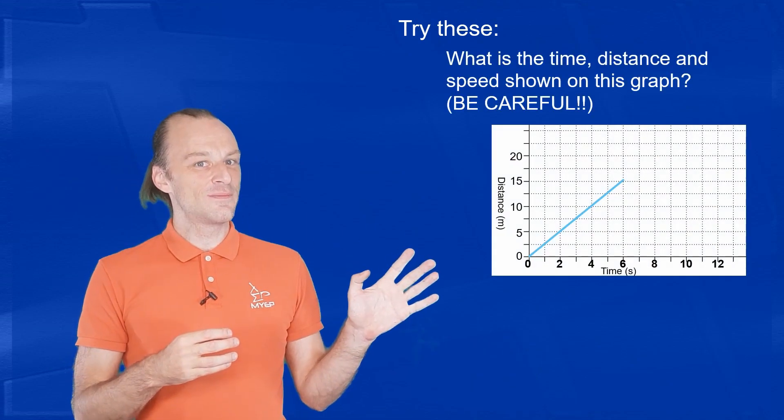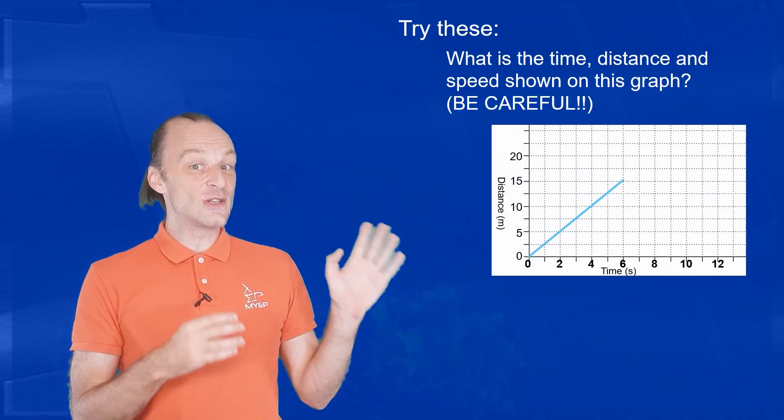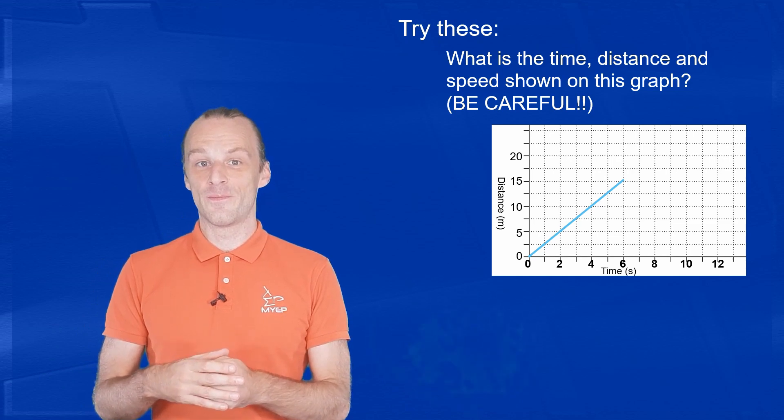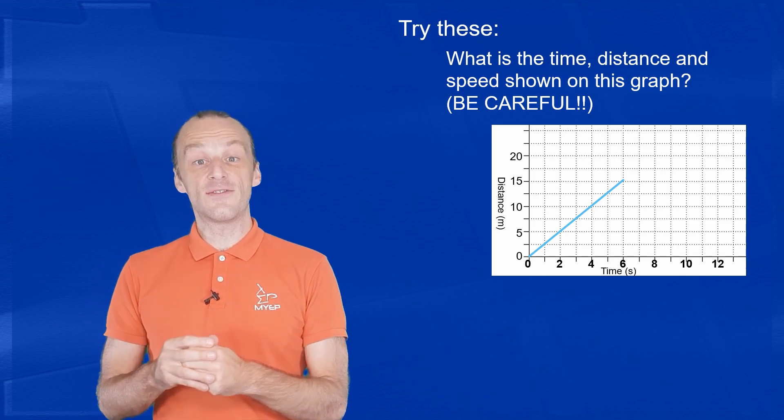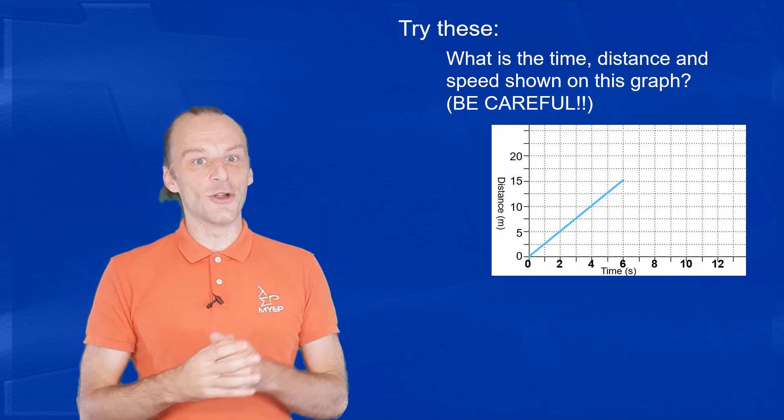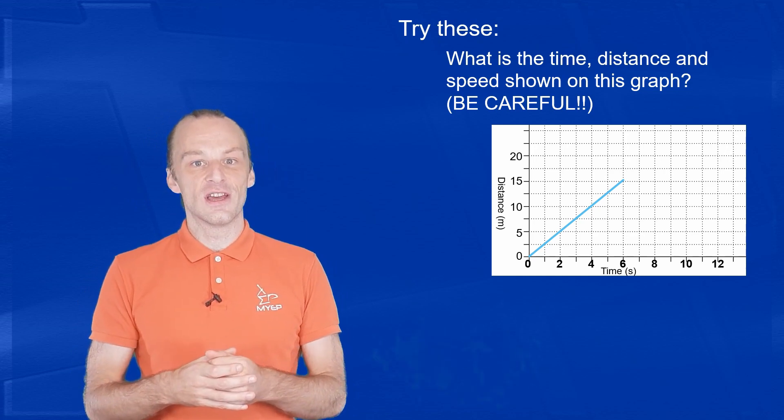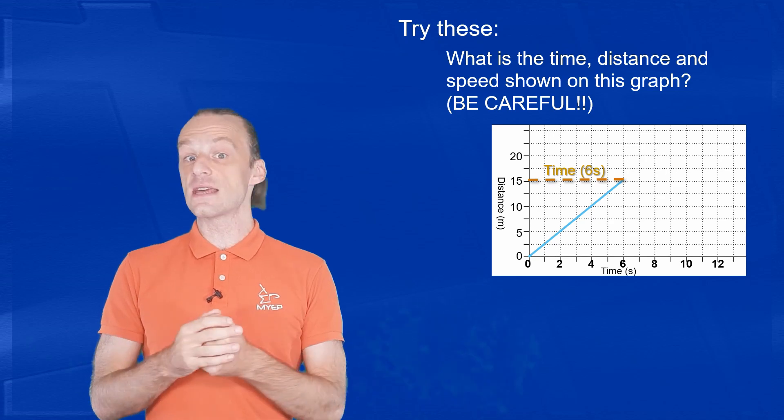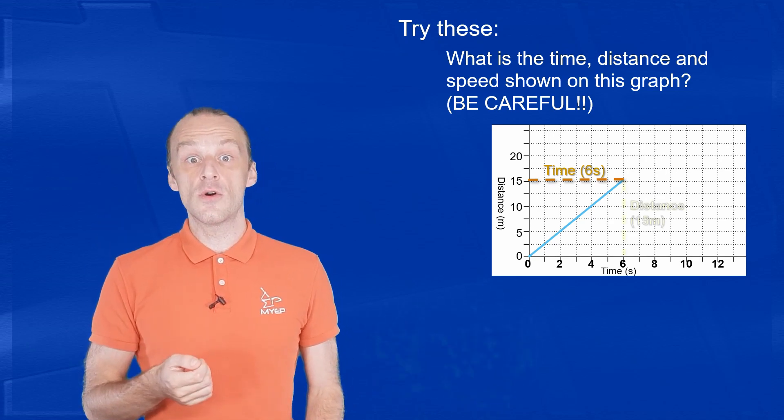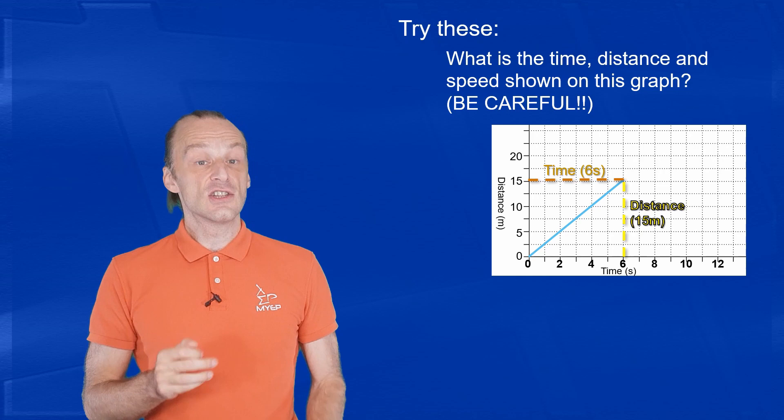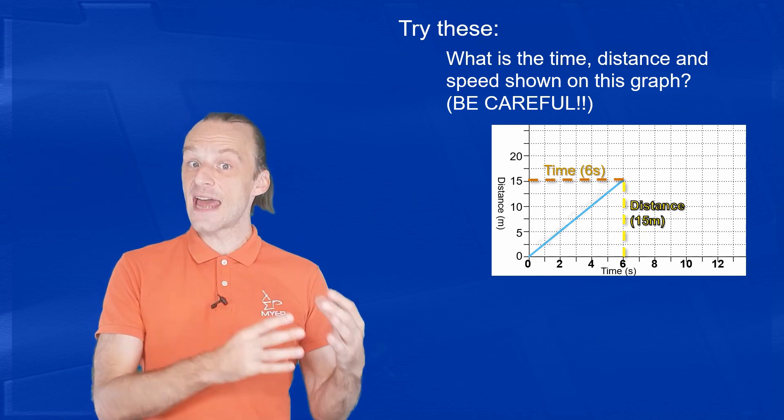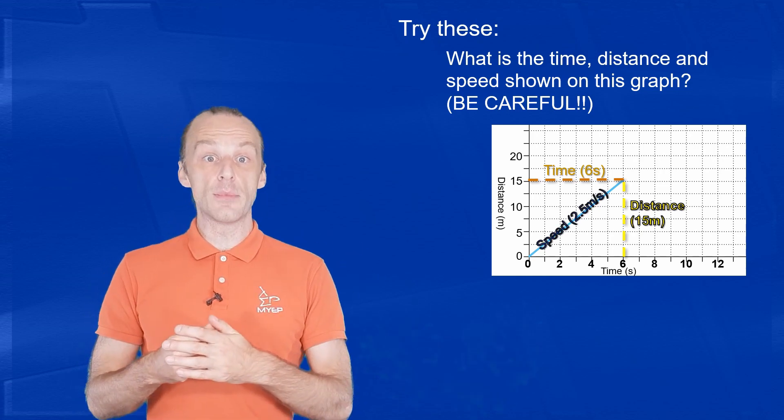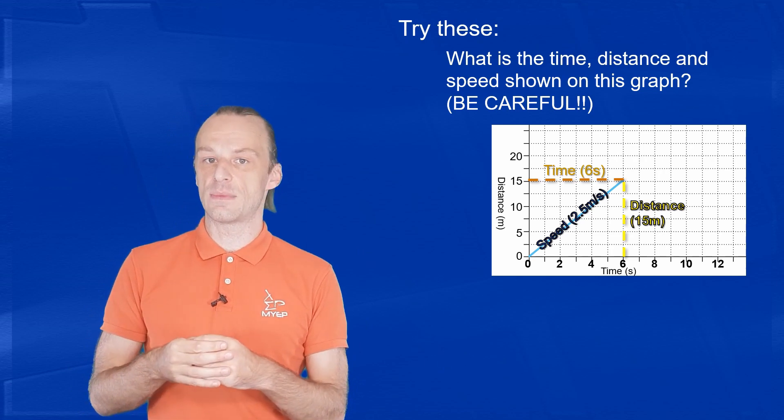Be careful looking at this one. What are the time, distance, and speed here? If you are looking carefully, then you'll see that the scale on this graph has changed. So the graph goes along the x-axis for 6 seconds again, and it goes up the y-axis for 15 meters again. So the speed here will be exactly the same as the last example, 2.5 meters per second.